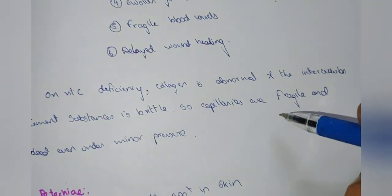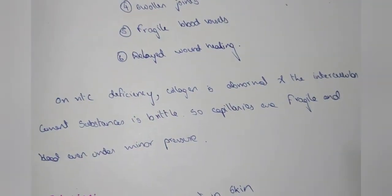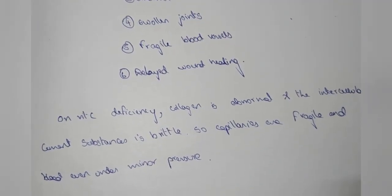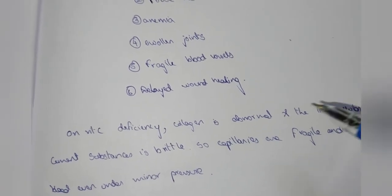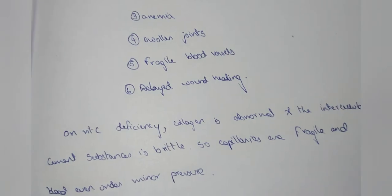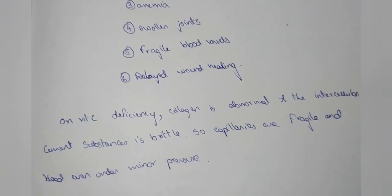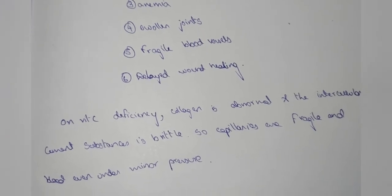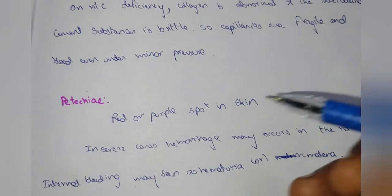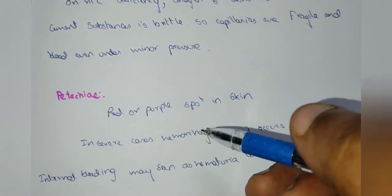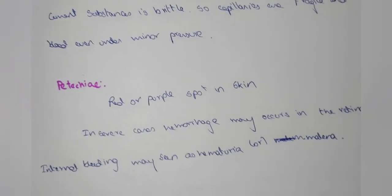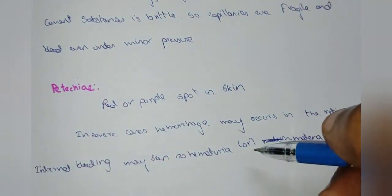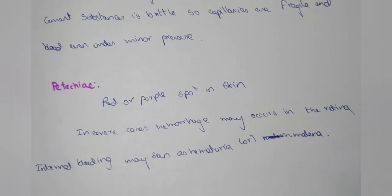In Vitamin C deficiency, collagen is abnormal and the intercellular cement substance becomes brittle, making capillaries fragile. This leads to delayed wound healing and bleeding even after minor pressure. Red or purple spots appear in the skin. In severe cases, hemorrhage may occur in the retina, and internal bleeding may present as hematuria and melena.